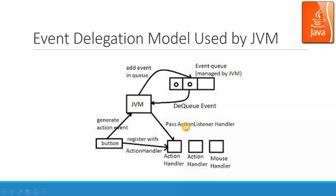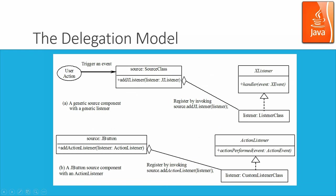This can be done in a multi-threading environment. The delegation model can also be viewed from a UML class diagram perspective. A user action triggers an event from the event source class, which can be a button. The button is associated with a certain listener of the X listener type — where X can be mouse, action, or other event object types. The source button is associated with a listener type defined as ActionListener with actionPerformed and a certain object type.